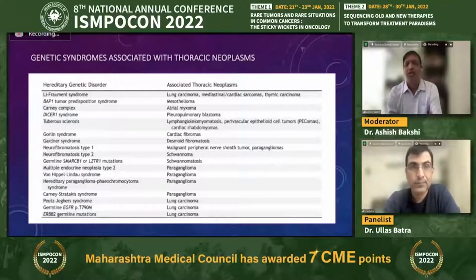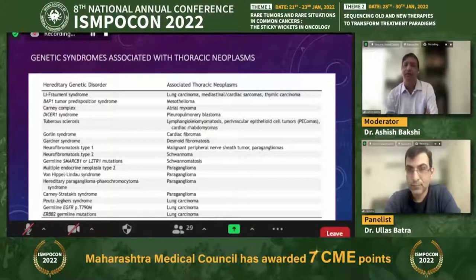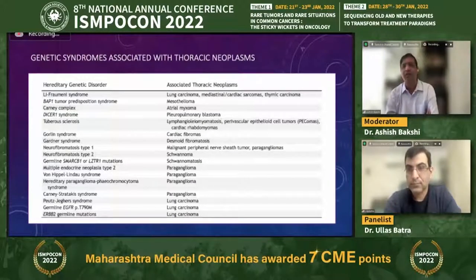Familial genetic syndromes are increasingly being recognized. As Dr. Ullas noted, ignorance used to be bliss — now, with MDT discussions and good clinical information, we are identifying familial lung cancers and other syndromes. If you start looking for them, you will find them. We have started incorporating early genetic counseling and germline assessment for patients with unusual rare presentations or specific family histories.